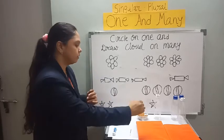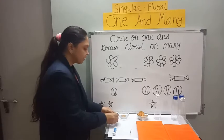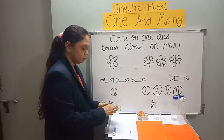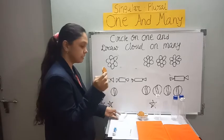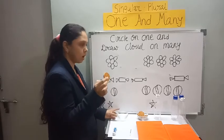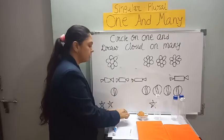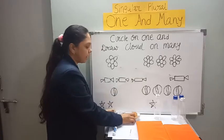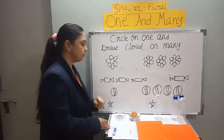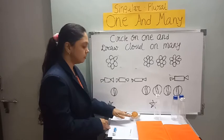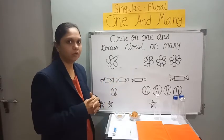So here I have arranged some objects. This is one biscuit — it's singular. And here I have three biscuits — that means it's many, it's plural.